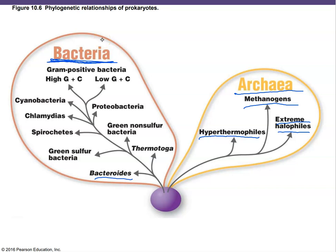Starting at the bottom of the bacterial branches, we have Bacteroides and Thermotoga, then green sulfur bacteria and green non-sulfur bacteria. Then there are the spirochetes and Chlamydia, which are intracellular parasites — bacteria that live inside other eukaryotic cells. Then we have the Proteobacteria, a huge group of gram negatives containing a humongous number of bacterial species. Then there are Cyanobacteria, which are bluish-green prokaryotes that can photosynthesize. Some people confuse them with algae, but algae are eukaryotic cells.